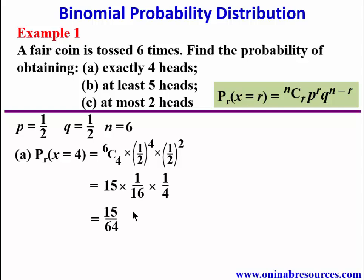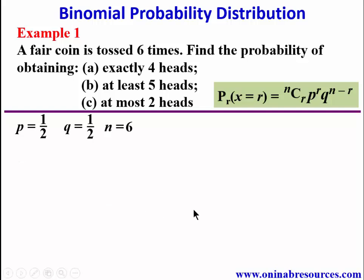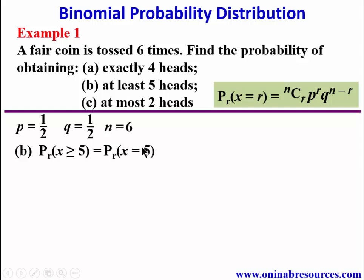For part b, the probability of obtaining at least five heads: since the least we can get is five heads, we can have five heads and one tail, or all six heads. So this becomes P(X ≥ 5) = P(X = 5) or P(X = 6), and since 'or' means addition, we sum those two probabilities.